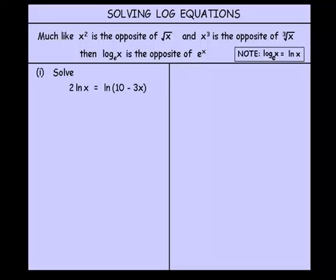So we're asked to solve 2 ln x equals ln of 10 minus 3x. Well, the 2 ln x can be rewritten. We can take that 2 from the front and we can put it up as an indice. So we can have the log of x squared on the left side equals the log of 10 minus 3x.